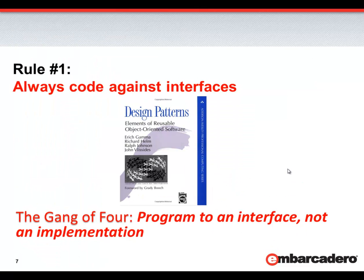I've been giving you examples from the real world, but now let's talk more specifically about code. I've got three rules for you. If you follow these rules, you should be able to easily integrate dependency injection into your application and end up with highly decoupled code. Rule number one: always code against interfaces.